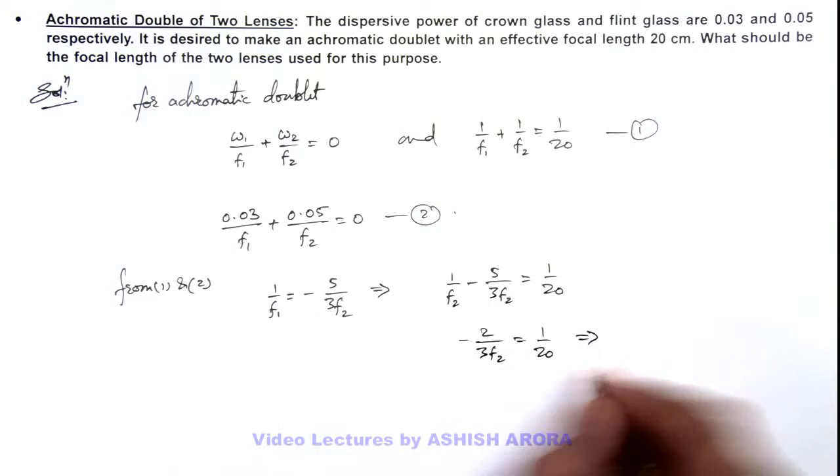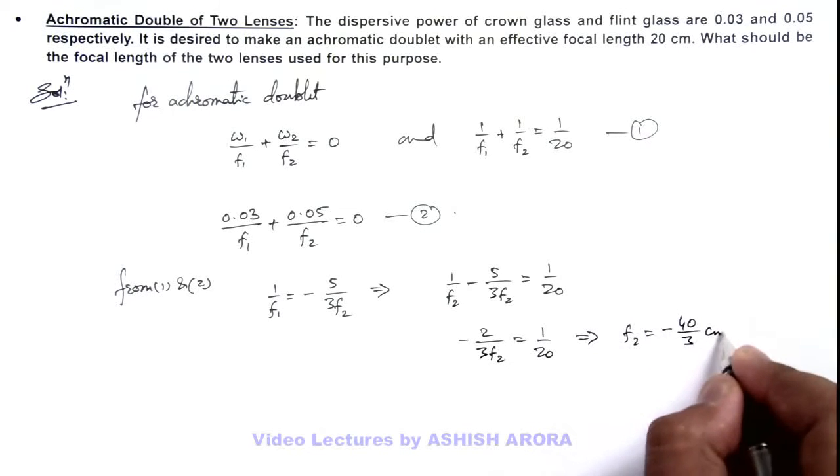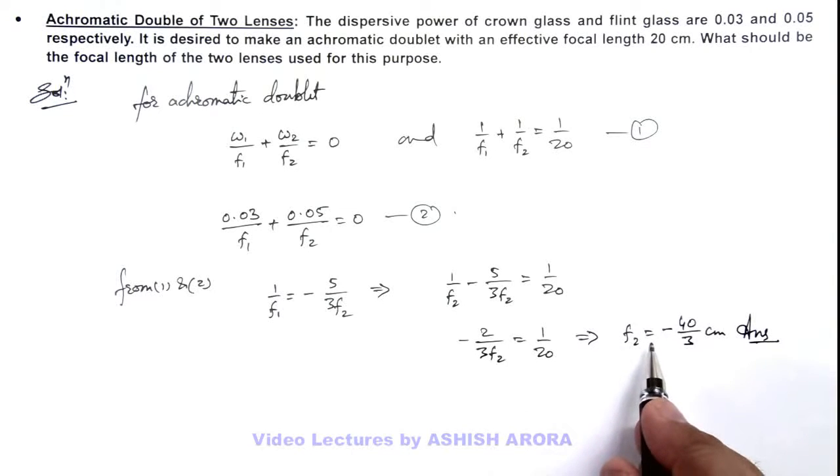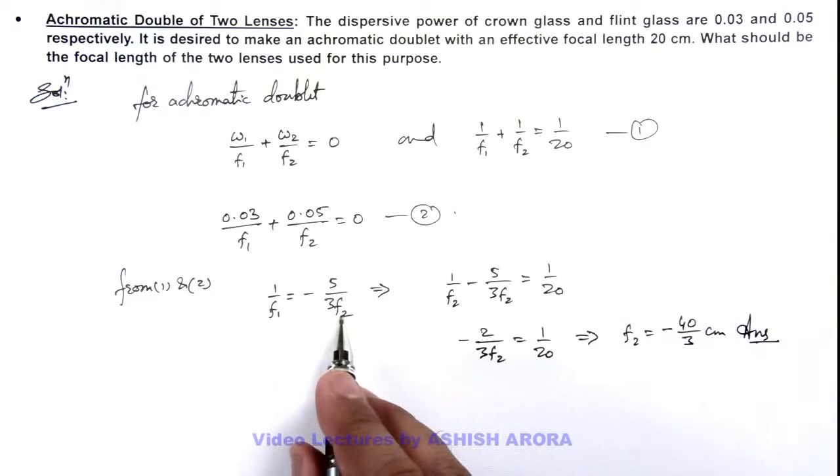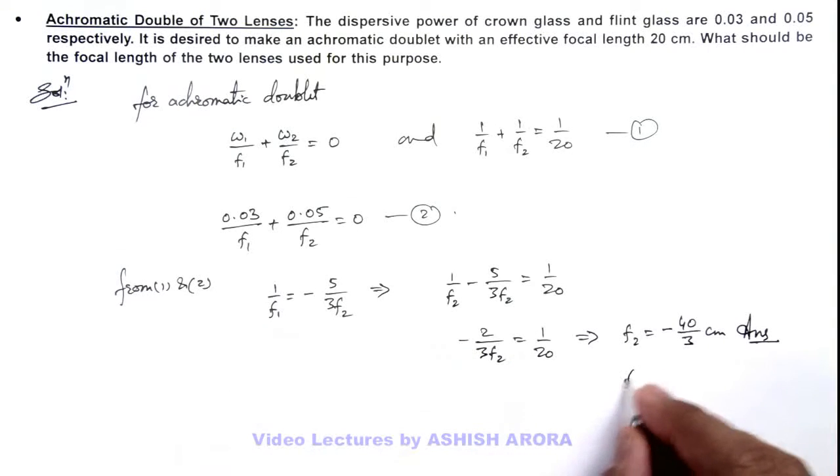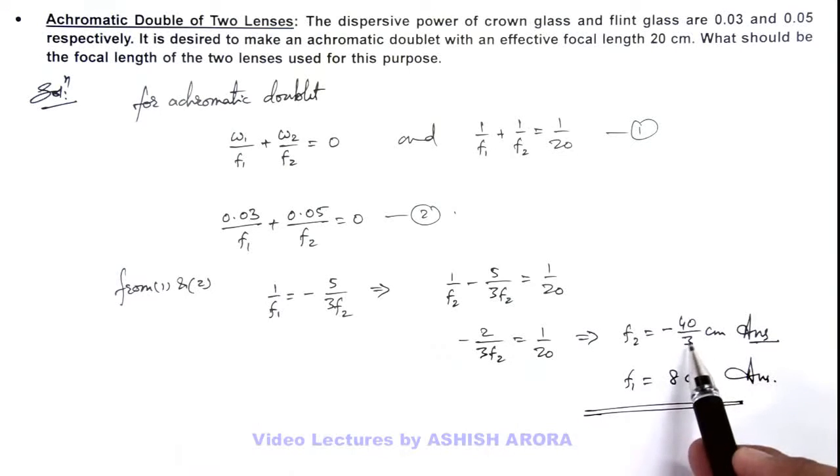This implies the value of f 2 we are getting minus 40 by 3 centimeters. This is one answer for the problem. If we substitute the value of f 2 over here, this will be 1 by f 1 is 1 by 8, so the value of f 1 is equal to 8 centimeters. This is another answer for the problem. So the two lenses to be used are of focal length 40 by 3 diverging and 8 centimeter converging lens.